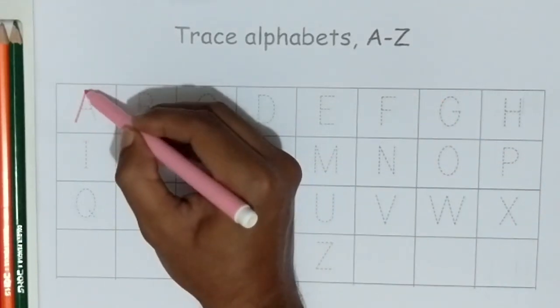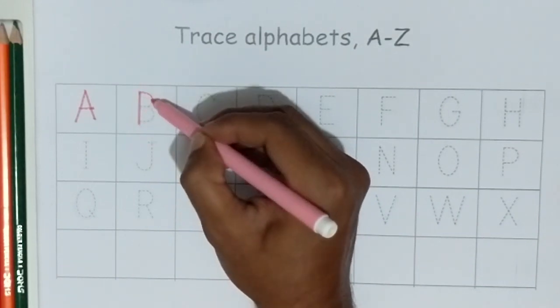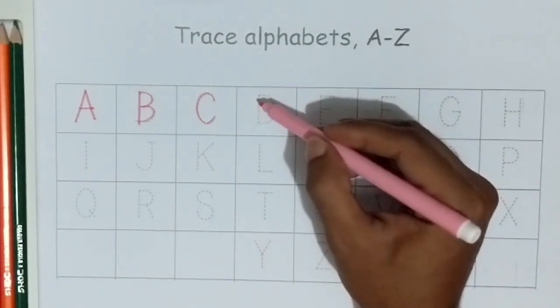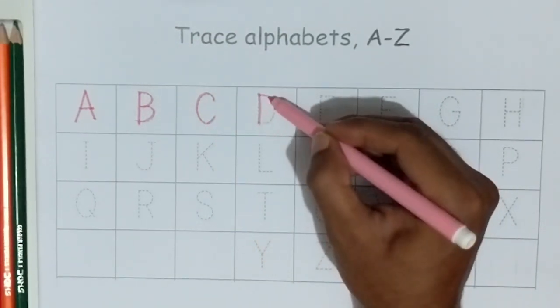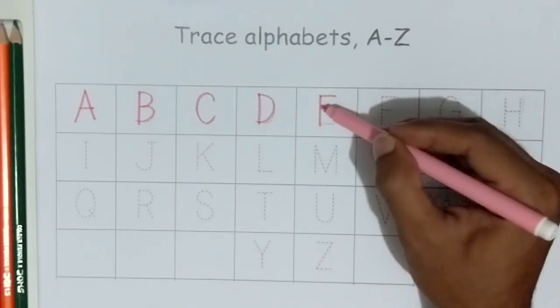A. A for apple. B. B for ball. C. C for cat. D. D for dog. E. E for elephant.